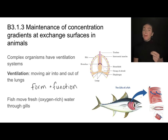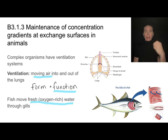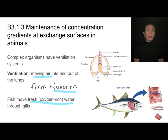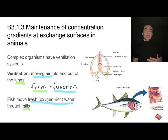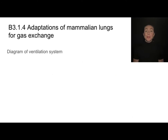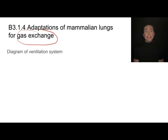Theme B is all about form and function. When we think about the function of moving air or moving fresh water in and out of ventilation systems, that's all to drive the diffusion process. Complex organisms have a ventilation system — for you that would be your lungs, and for fish that would be their gills. But both are accomplishing the same function. Let's take a look at these adaptations of mammalian lungs with the end goal of gas exchange.